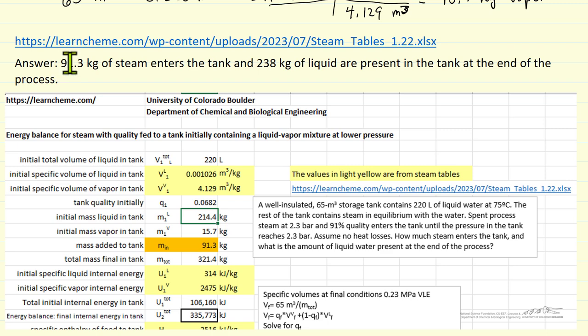The final answer - we add 91.3 kilograms of steam into the tank. And finally, we end up with 238 kilograms of liquid in the tank at 2.3 bar.